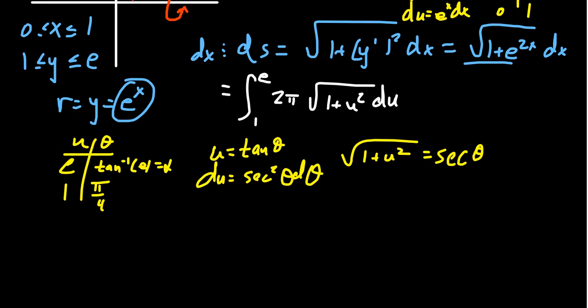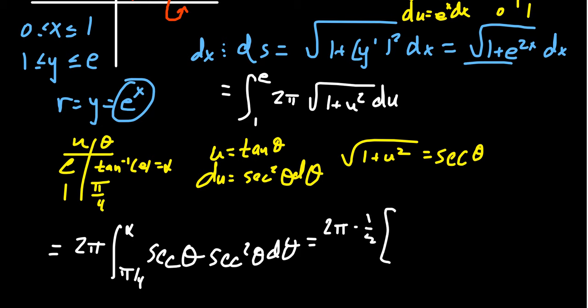Making that substitution, you're going to get 2π. Integrate from π/4 to α. You're going to get the square root of 1 plus u squared, which is secant θ. Du is going to become secant squared θ dθ. We've seen this puppy before. Secant cubed is not a super easy one to do, but we have done it before.